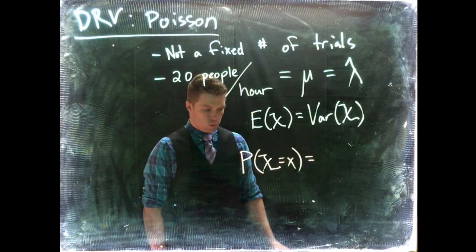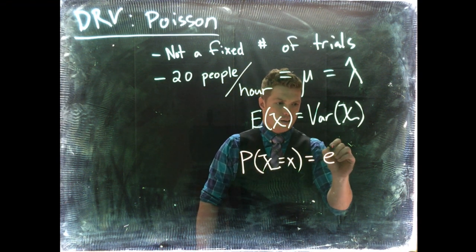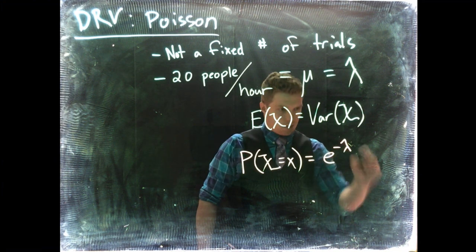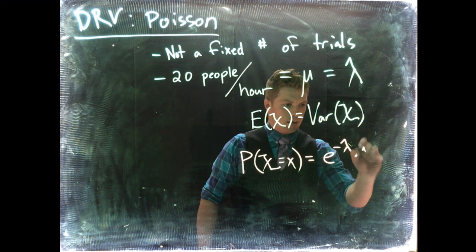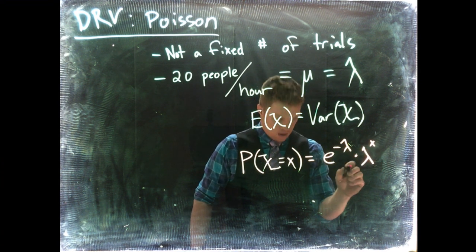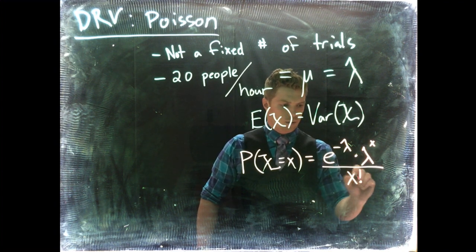And this is going to equal e to the negative lambda, and then we're going to multiply that by lambda to the specific member of the support, and we're going to divide by the support value factorial.